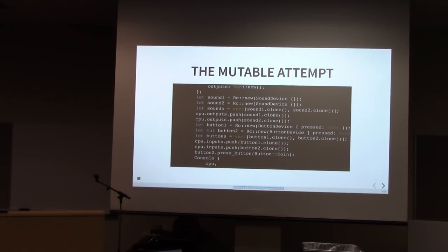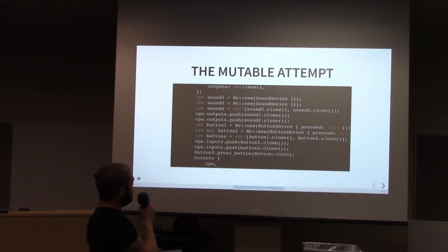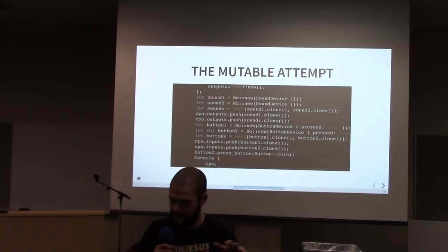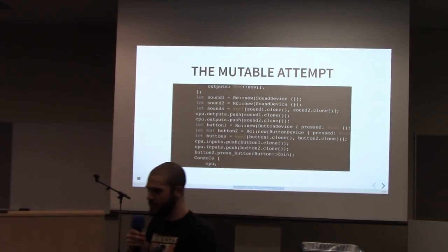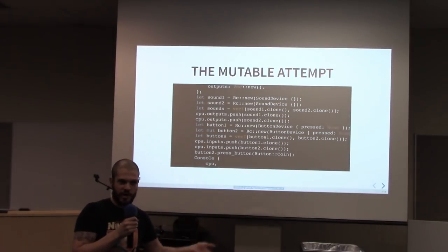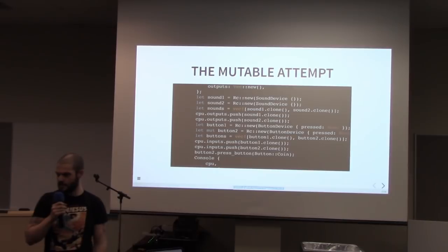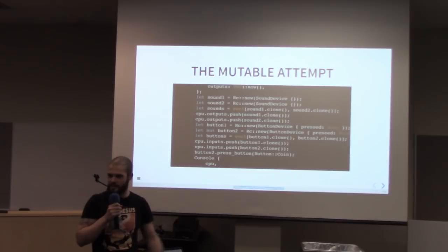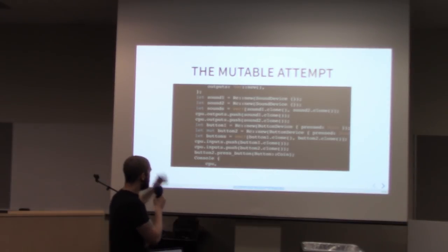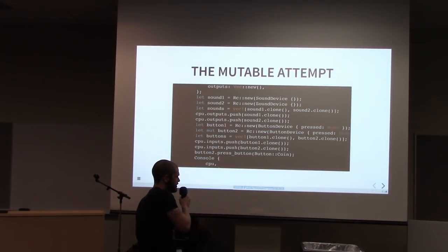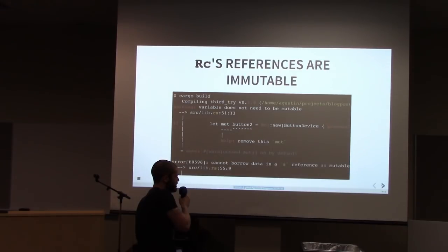The next problem: this works now, but it's not exactly what I need. When you input something in the buttons, I need to be able to store that a button was pressed, because a different part of the application needs to read the list of buttons and see which are pressed to update whatever is happening. So I needed some kind of mutability on this object. My first intuition was that RC won't complain if I just make a variable mutable. I tried that, and it failed.